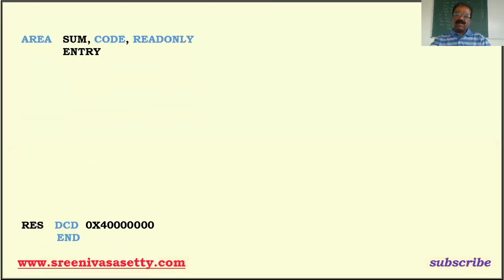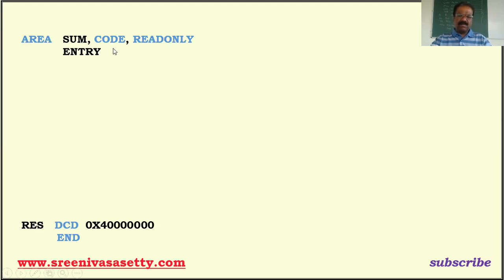Now I'm going to explain the program. If you want to write any assembly language program using the LPC2148, this is the format. 'AREA' followed by the name of the program, then 'CODE' and 'READONLY'. When writing any program we need three types of memory: program memory, data memory, and stack. The nature of program memory is read-only, so it is code memory. The AREA directive decides which section of memory we are using.